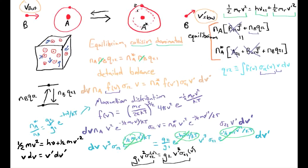In a future video we'll talk about how to estimate these collisional cross-sections for cases like electrons colliding with atoms. Electrons are particularly important because they move much faster than most other particles, and so they tend to dominate the collisional rate coefficients.